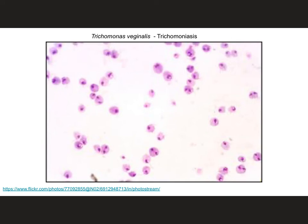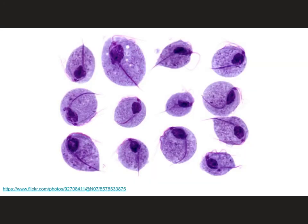Trichomoniasis is caused by a parasite called Trichomonas vaginalis. These are the little parasites — they're a little hard to see in the first image, but in a closer view you can see that they're fairly large cells, and they have flagella sticking out of them that they use to swim around. These are fully eukaryotic cells like human cells, only they have flagella.